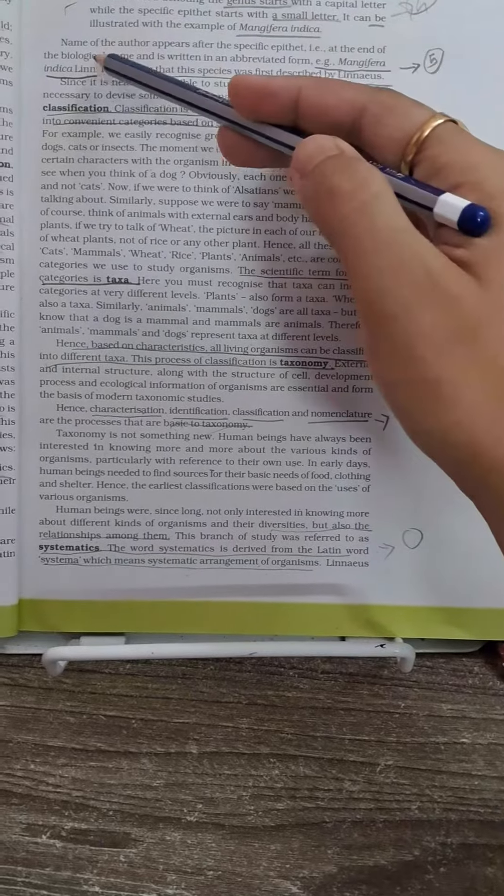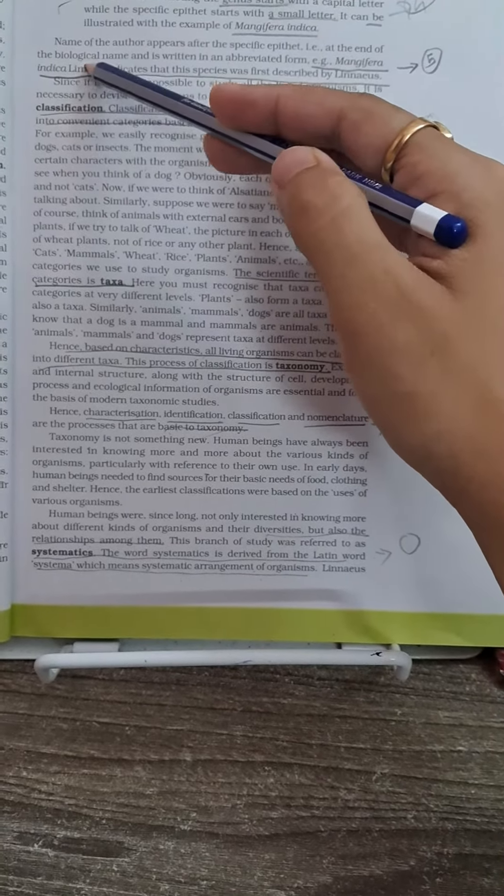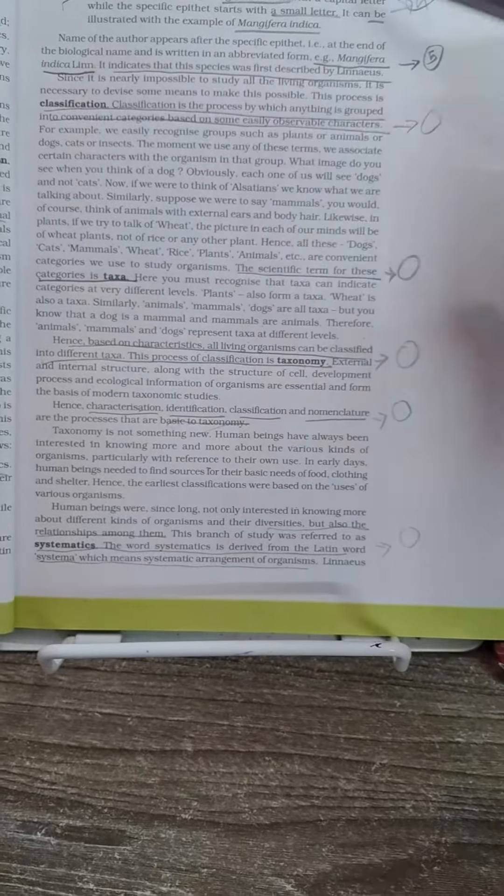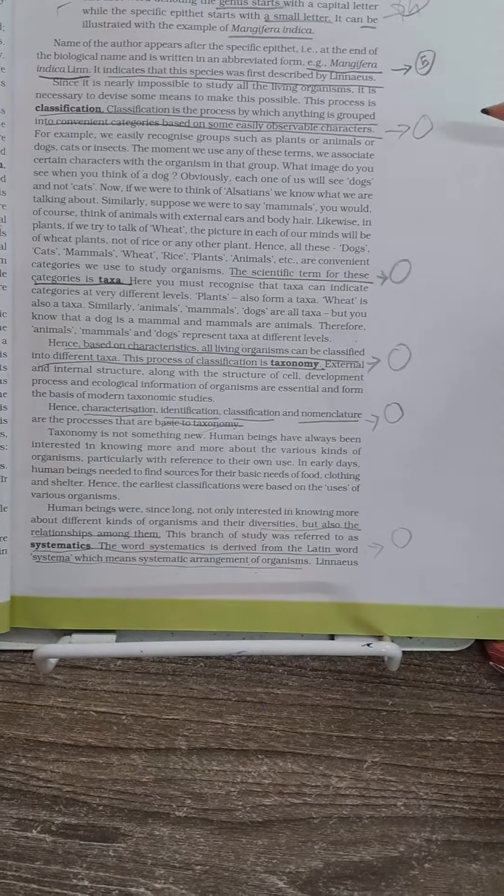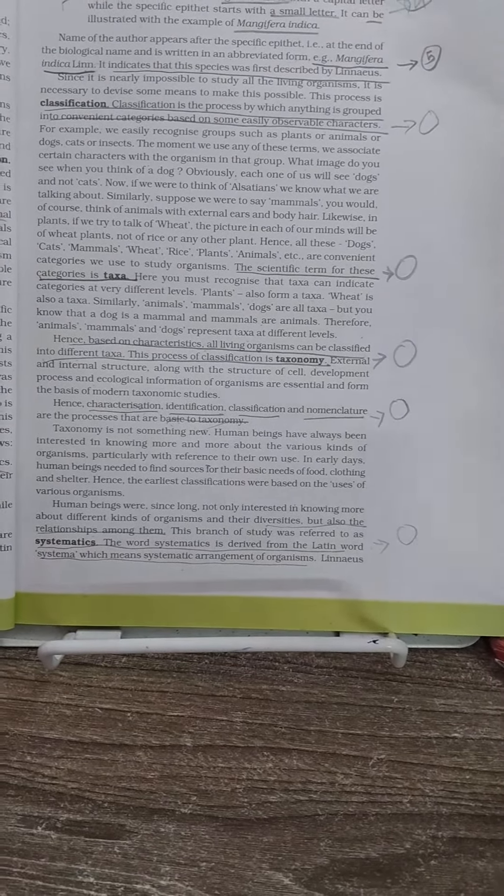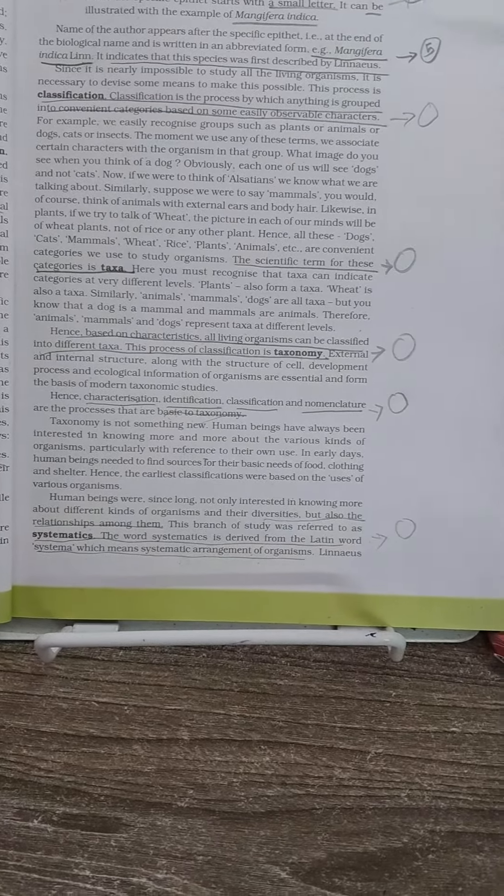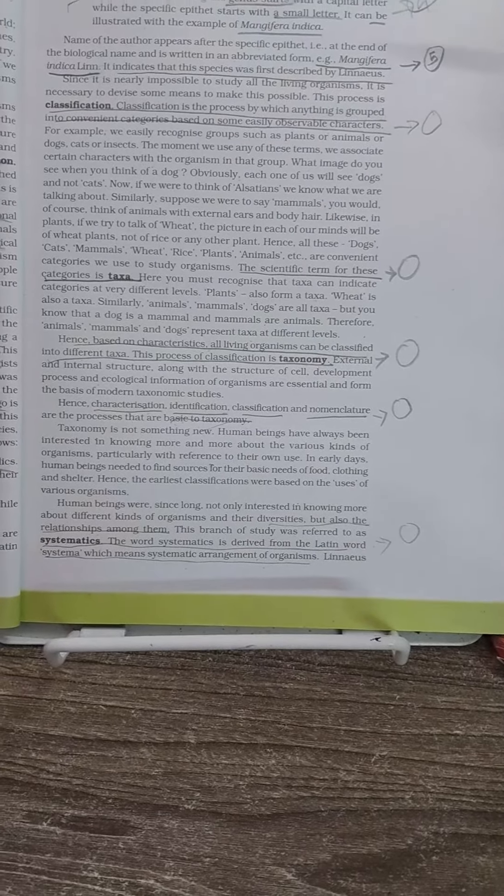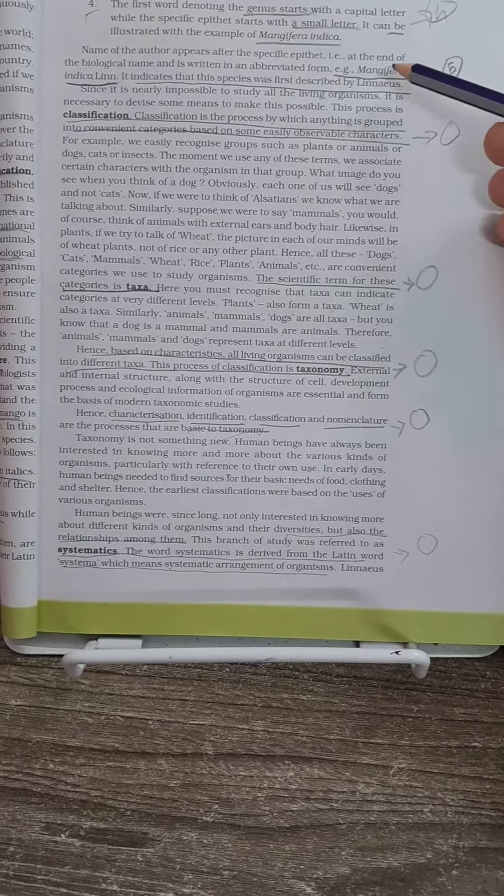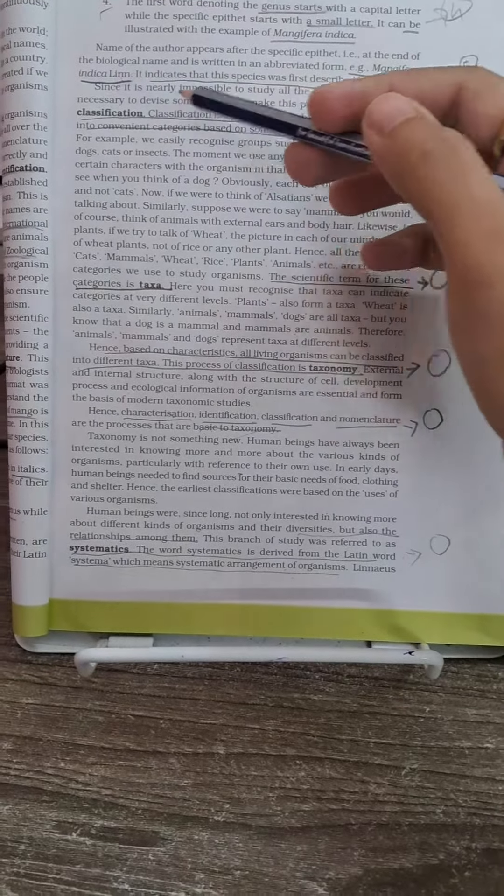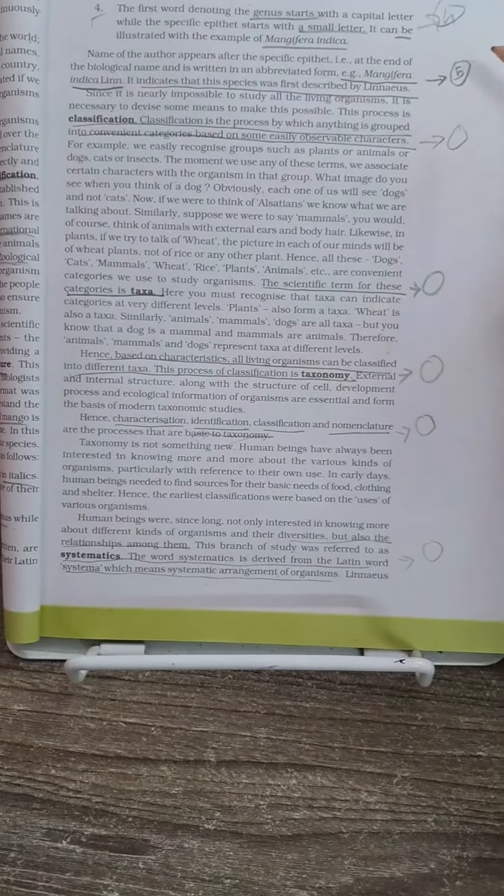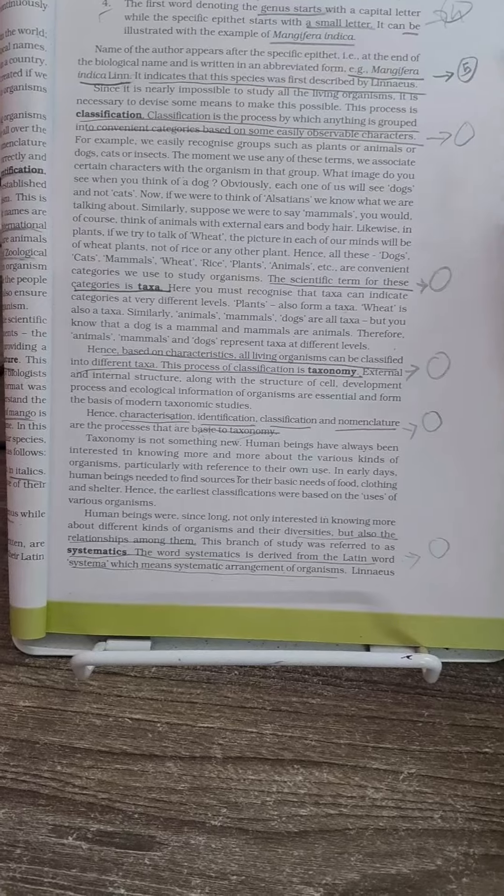That is Mangifera indica Lin - the name of the author is also mentioned here. They will try to confuse you by giving the binomial nomenclature of mango, that is Mangifera indica, Mangifera indica Lin, and other options. When they ask you which one is the correct one, you have to choose this one. This is a very important MCQ which has been asked many times.